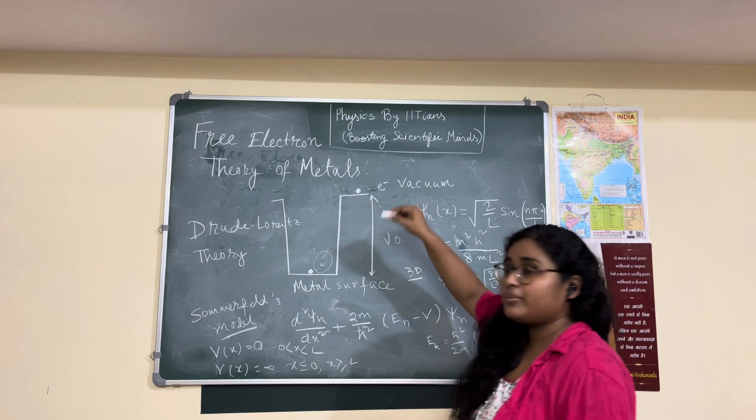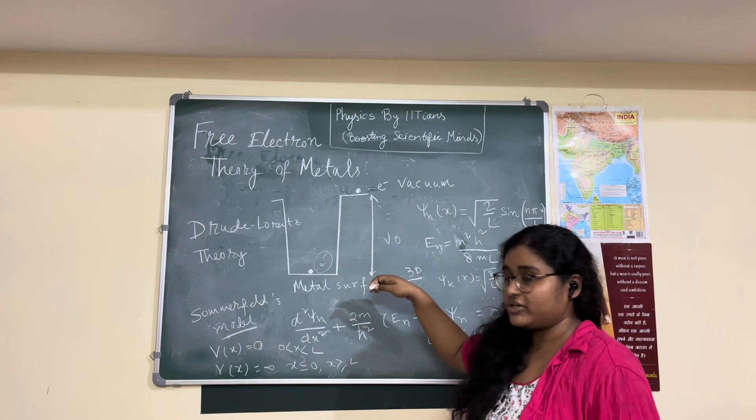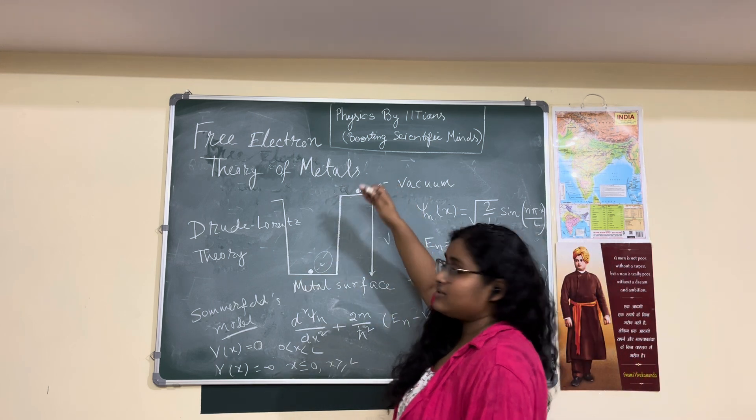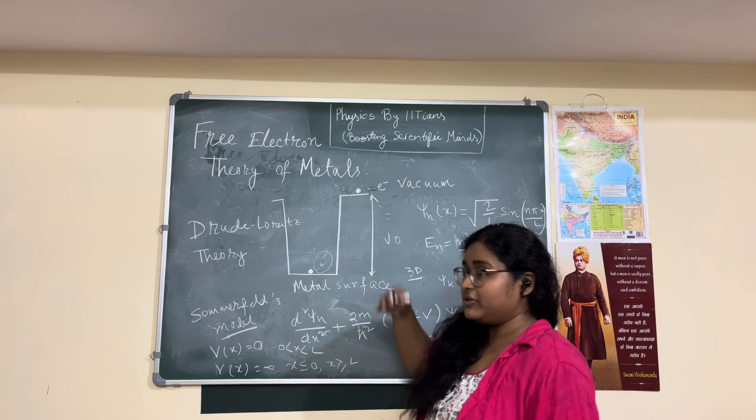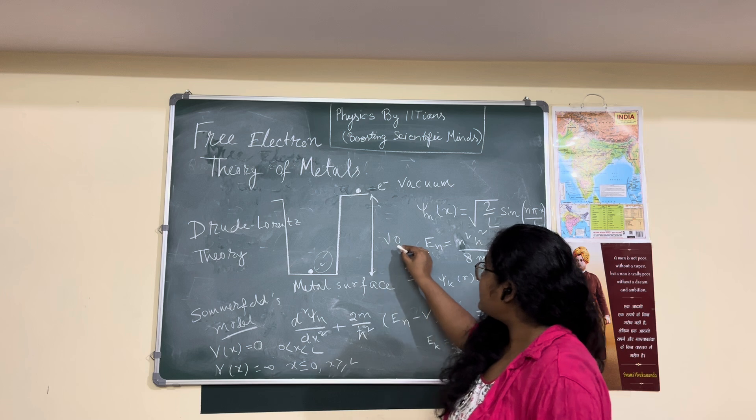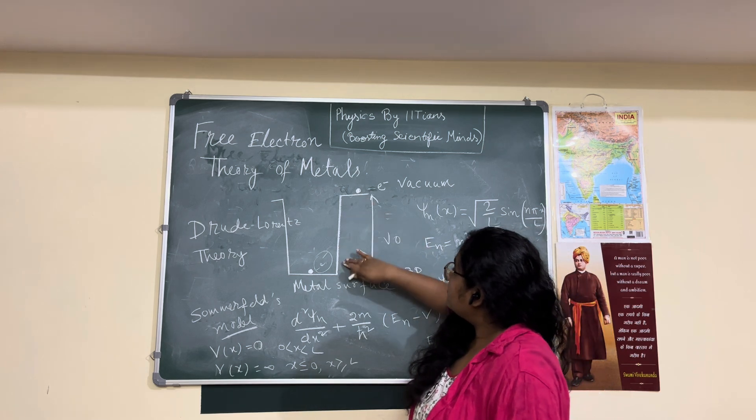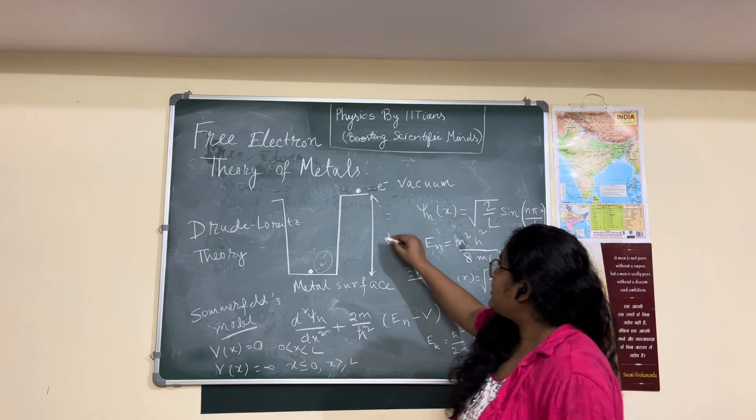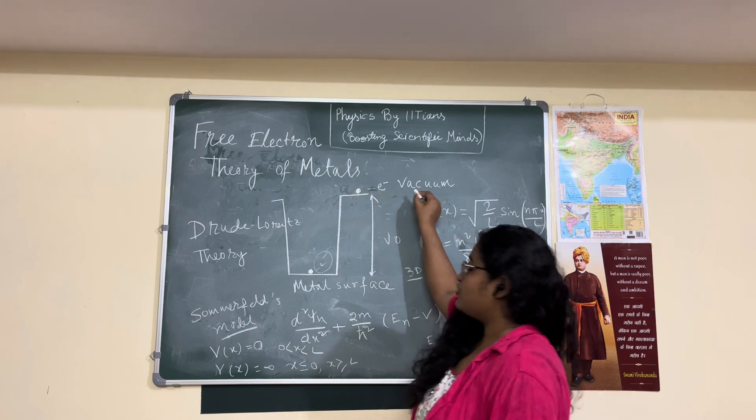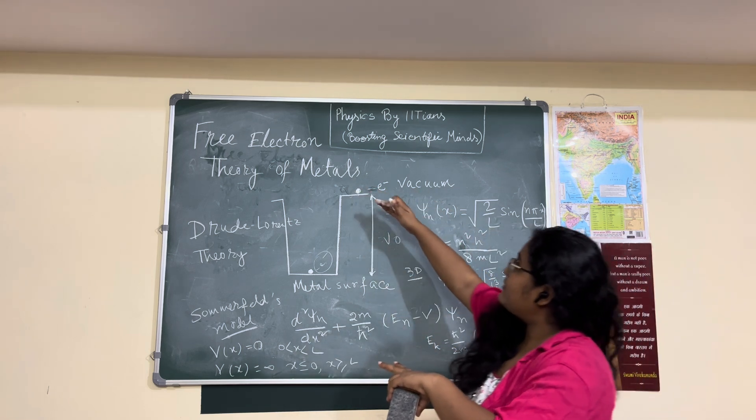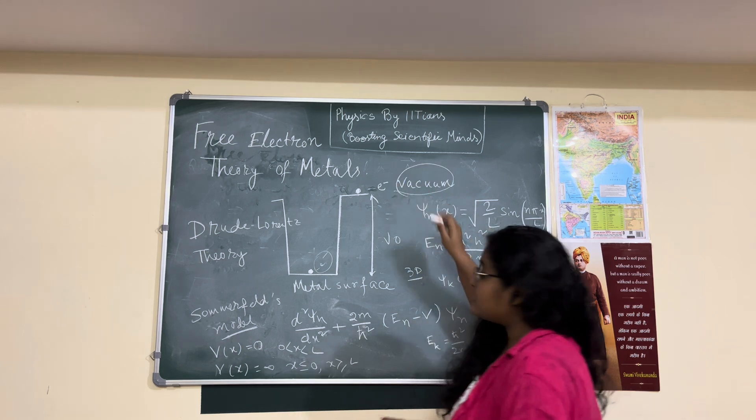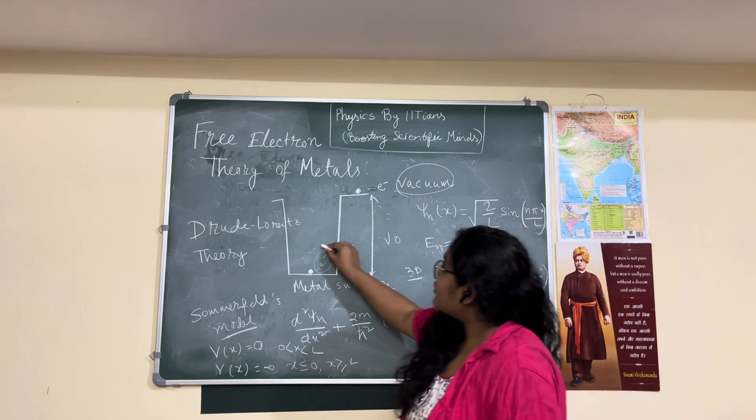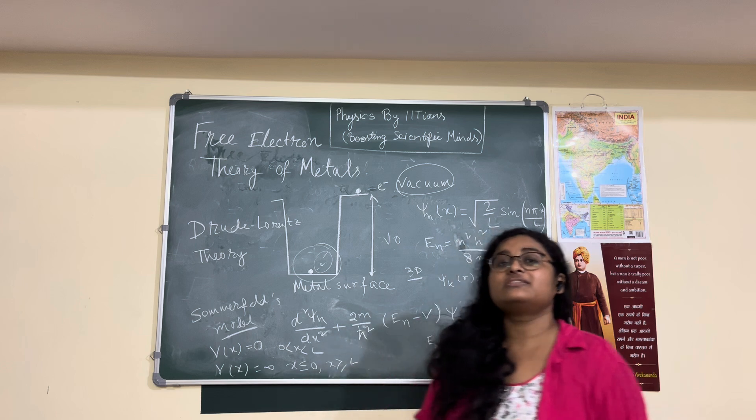It will have a potential of let's say V naught, and it is bounded within the metal due to this Coulomb attraction potential of V naught. And if it is outside the metal, there is some energy difference. If we give some extra energy so that it can overcome the barrier of V naught and it can come to the vacuum.